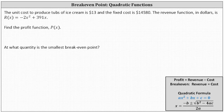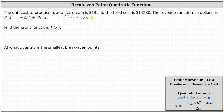Recall that the profit function is equal to the revenue function minus the cost function. We are given the revenue function. We need to find the cost function, given we know the unit cost to produce tubs of ice cream is $13 and the fixed cost is $14,580. This indicates the cost function c of x is equal to $13 times x plus 14,580. We have the total cost function c of x equals the variable cost plus the fixed cost.